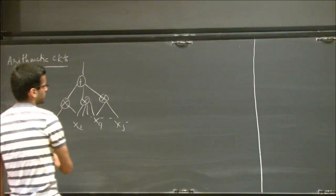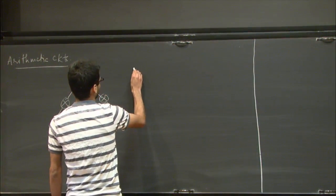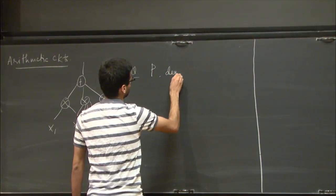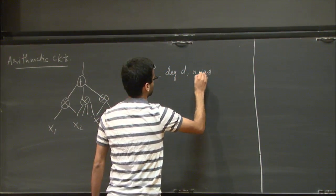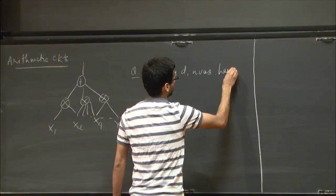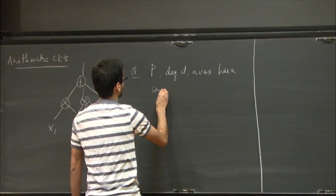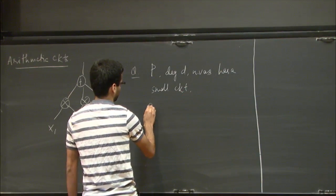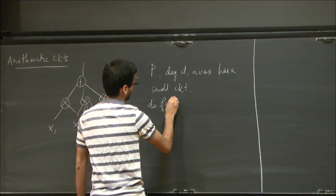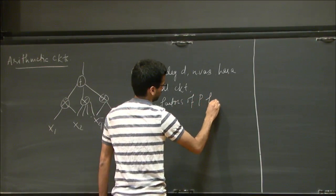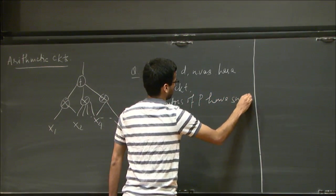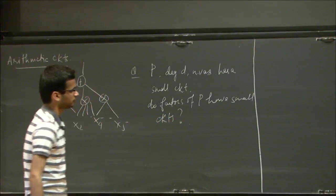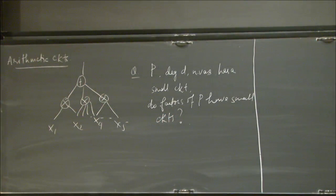One specific question of that type would be: let's say P is a polynomial of degree d in n variables and has a small circuit. Do factors of P have small circuits?